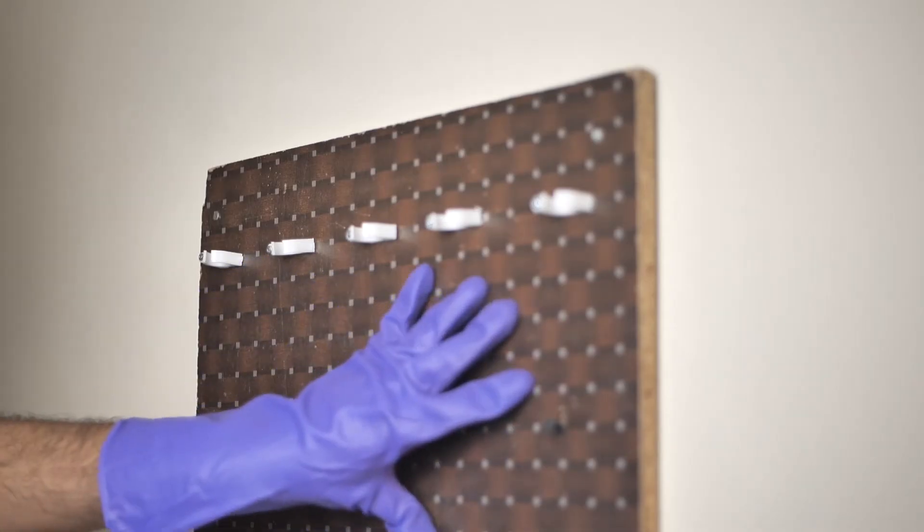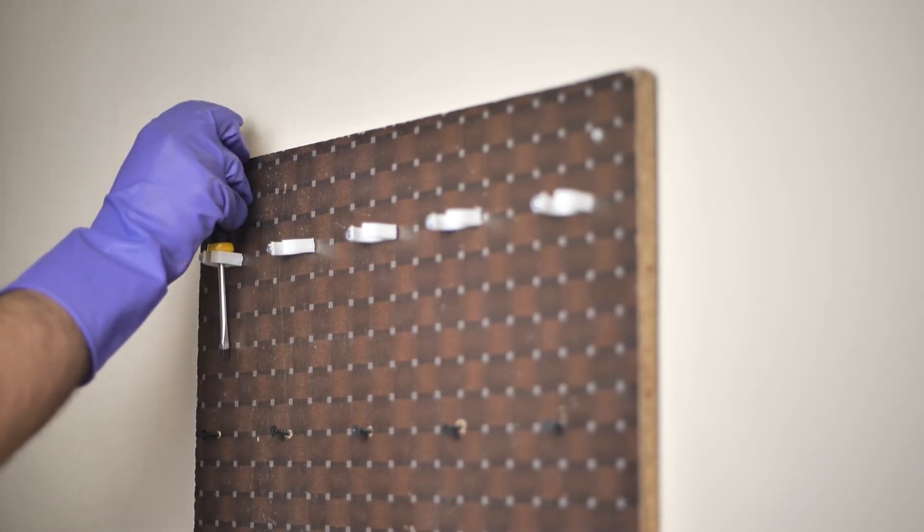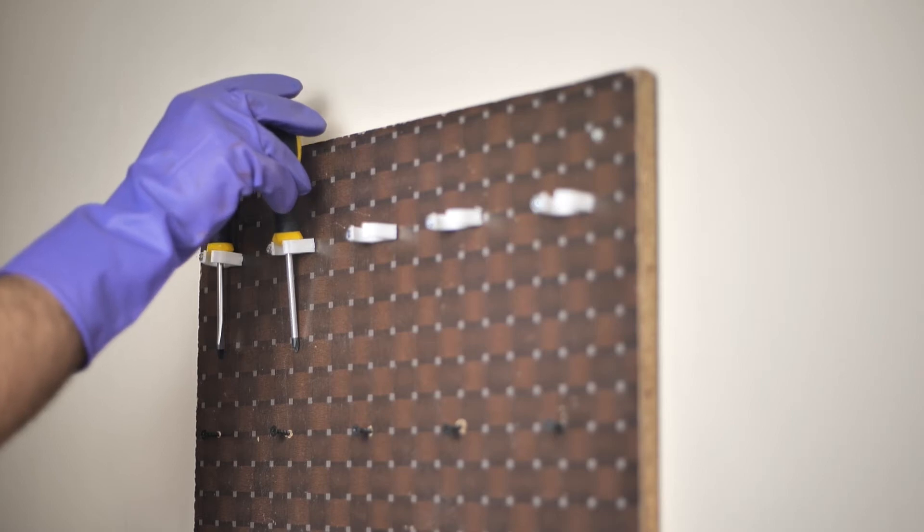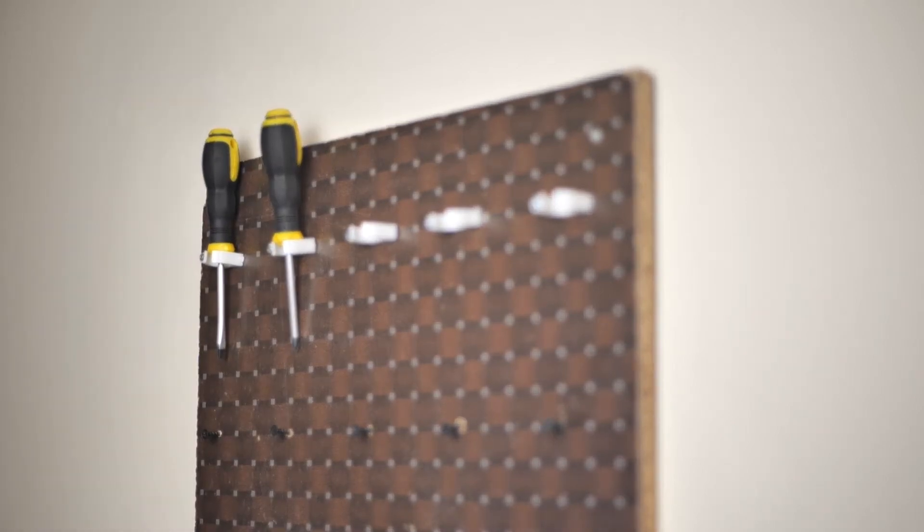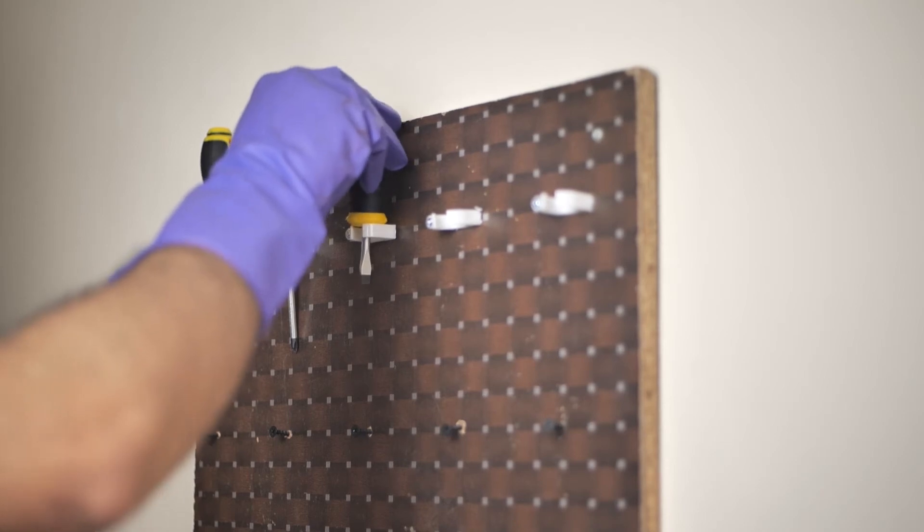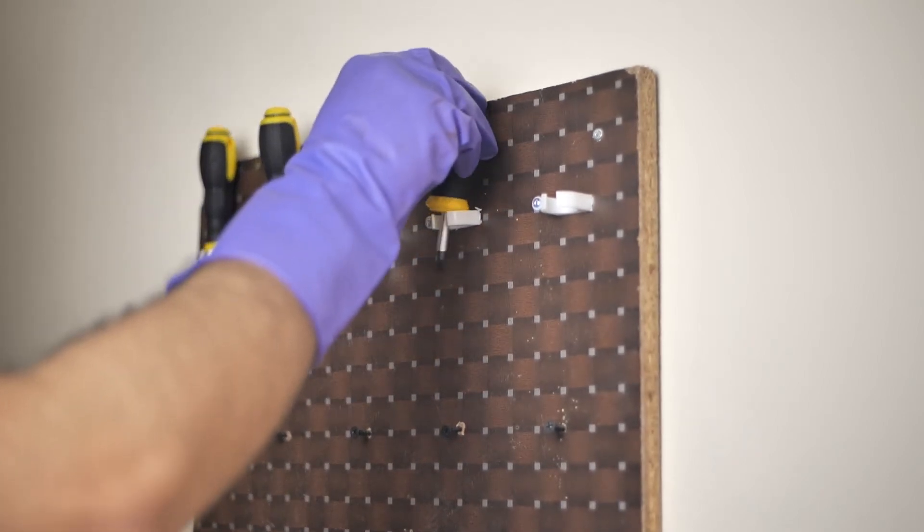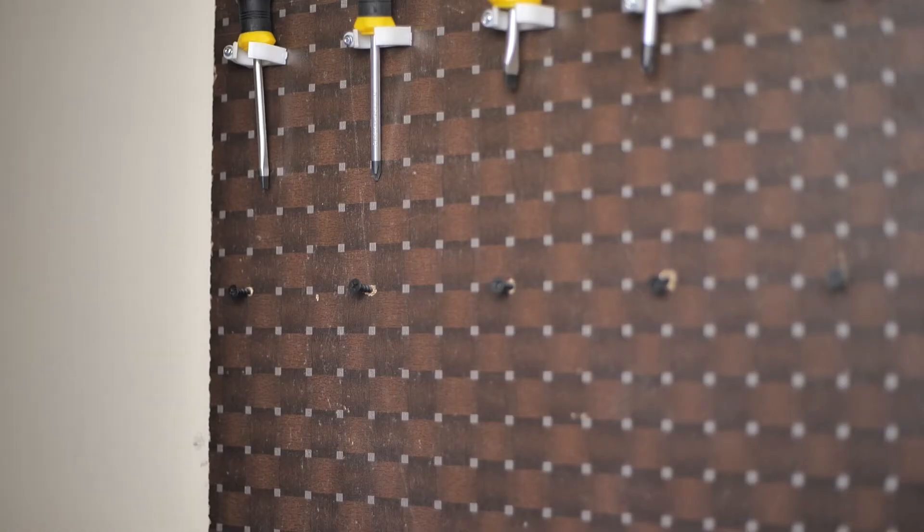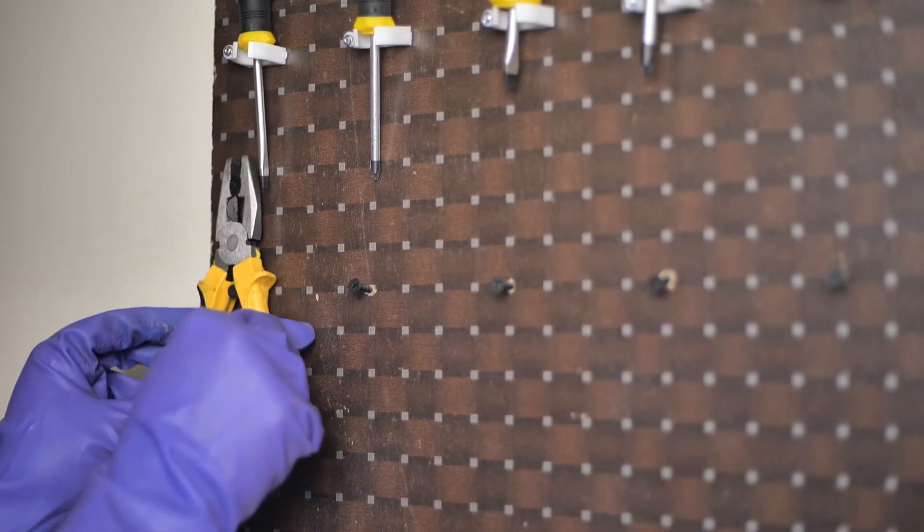Once you cover one part of the board from left to right with wire clips and another part with screws, your hanger is ready for use. As you can see, we are easily hanging our screwdrivers on the top part. The pliers are also comfortably placed on the screws.